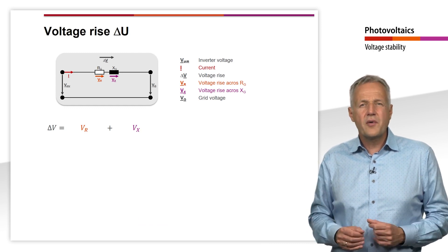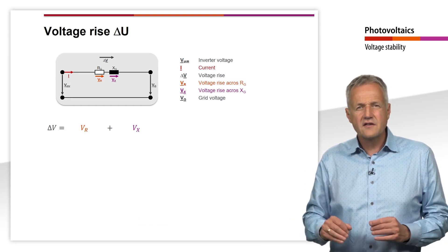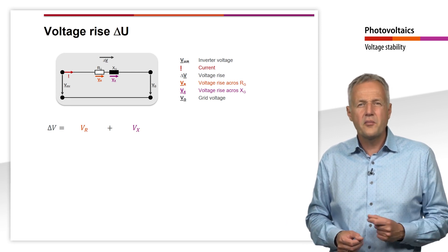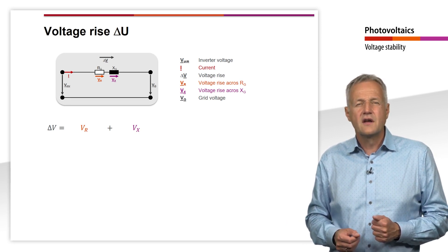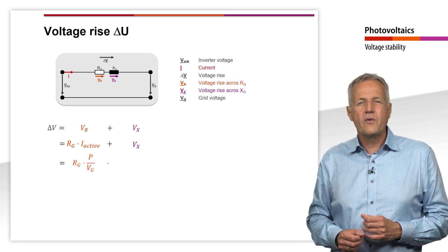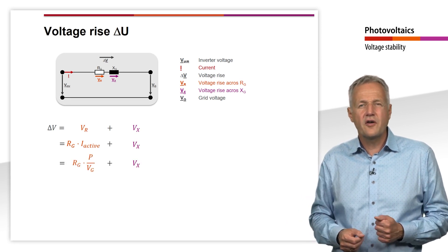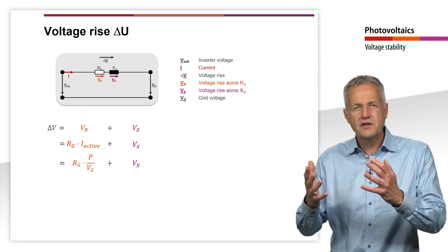The voltage drop across the ohmic resistance of the grid is caused by the active component of the current. According to Ohm's law, we can also calculate this from the coefficient of active power to grid voltage.